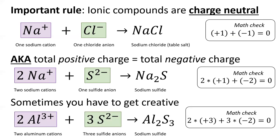Sometimes you have to get a little creative in these formulas. Aluminum sulfide needs two aluminum ions for every three sulfide ions in order to be charge neutral. Before you move on to the next slide, convince yourself that the math for each of these formulas works out. Ionic compounds must be charge neutral. If it were possible to form an ionic compound that were not charge neutral, it would literally explode.